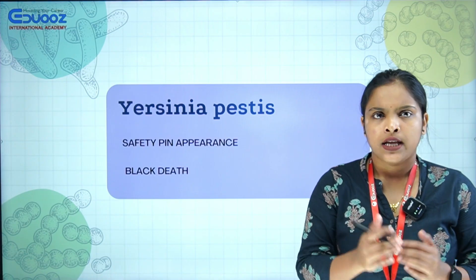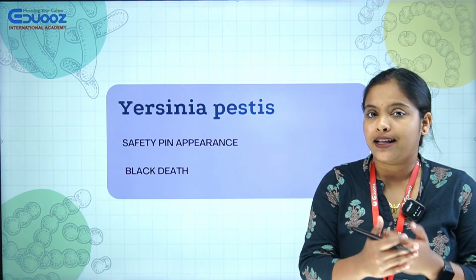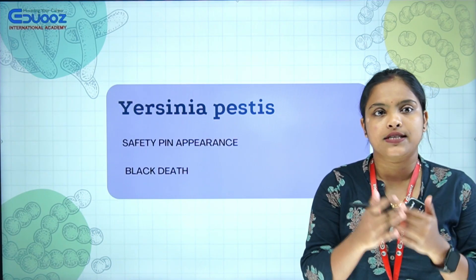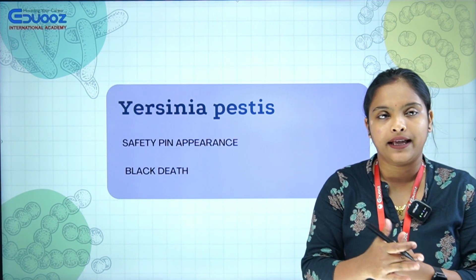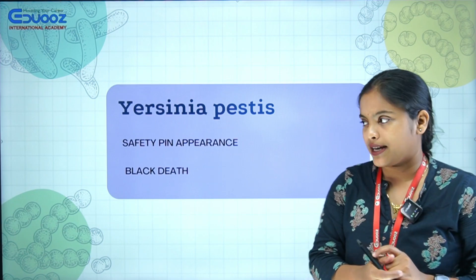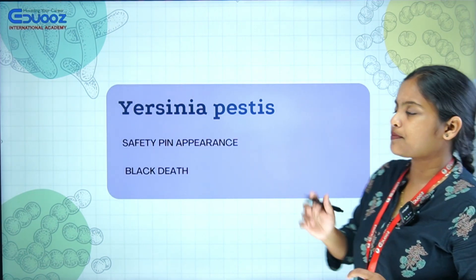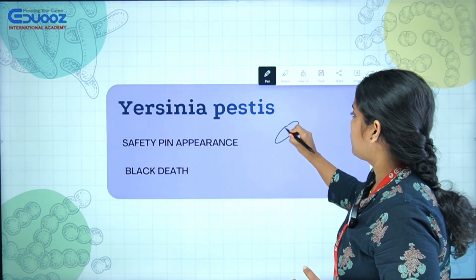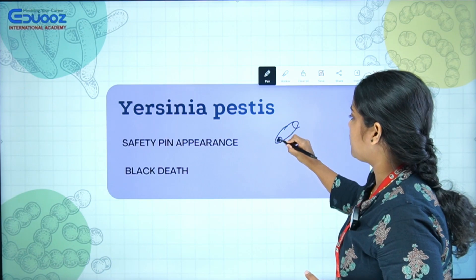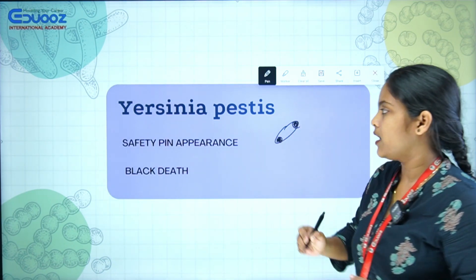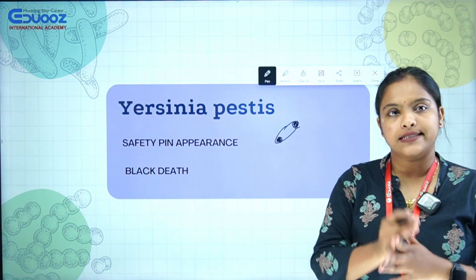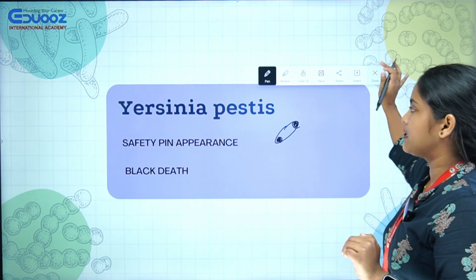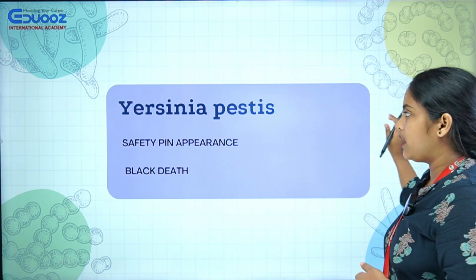Yersinia pestis — Yersinia pestis causes Plague, also known as Black Death. The important morphological feature is a Safety Pin-like Appearance.